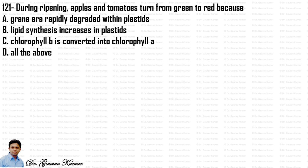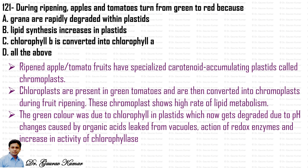The first question: during ripening, apples and tomatoes turn from green to red because ripened fruits have specialized carotenoid-accumulating plastids called chromoplasts. Chloroplasts present in green tomatoes are converted into chromoplasts during fruit ripening. The green color was due to chlorophyll in plastids, which gets degraded due to pH changes caused by organic acids leaked from vacuoles, or by redox enzymes, or by increased activity of the chlorophyllase enzyme.